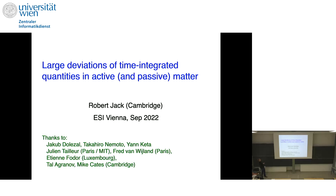Thanks to various people: Jacob Dollazal, Takahiro Nomoto, and Jan Ketter were PhD students, master's students, and a postdoc who did some of the numerical work you'll see. On the theoretical side, there have been various papers with Julien Tailleur, Fred Bannert-Vigiland, Etienne Fodor, and Mike Cates, who's in Cambridge. And Talagrinov is a Blavatnik fellow at the moment in Cambridge who did a lot of the analytical calculations in the middle that you'll see.